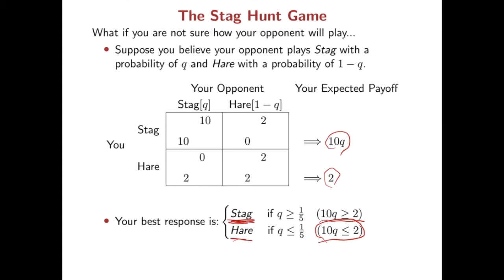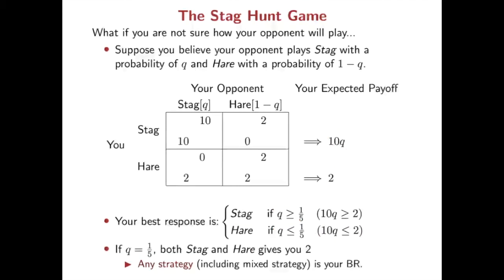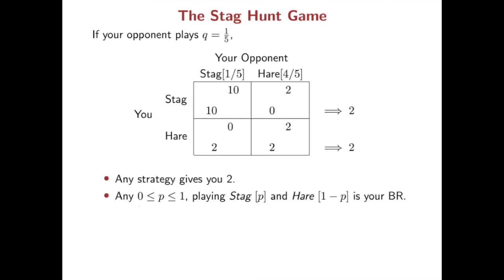Stag is your best response if q is greater than 1/5, and Hare is your best response if q is less than 1/5. If q is exactly 1/5, then both actions give you the same expected payoff, so any strategy — including any mixed strategy and randomization between Hare and Stag — gives you the same payoff and any strategy is your best response. Now, suppose your opponent actually plays a mixed strategy: Stag with probability 1/5 and Hare with probability 4/5.